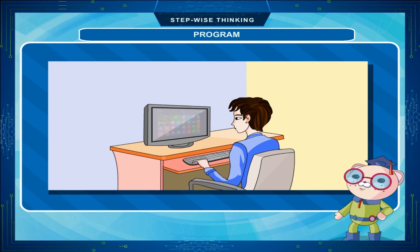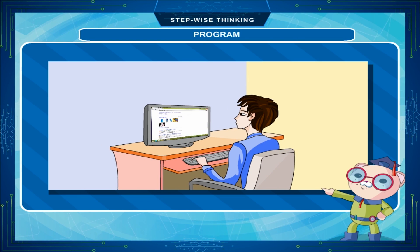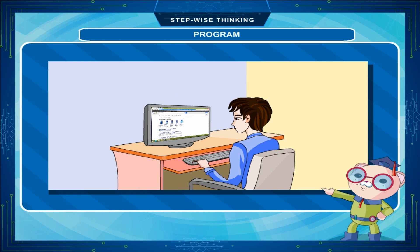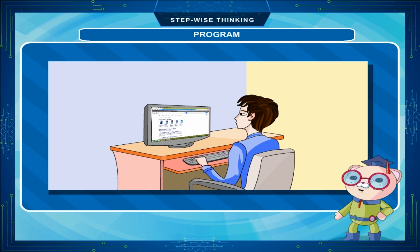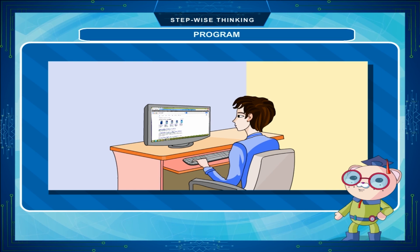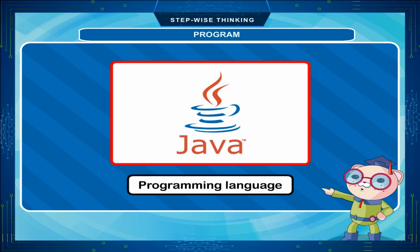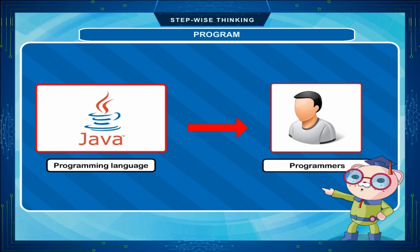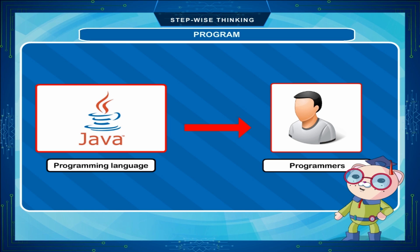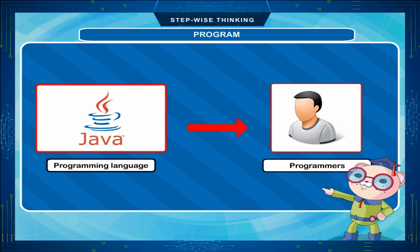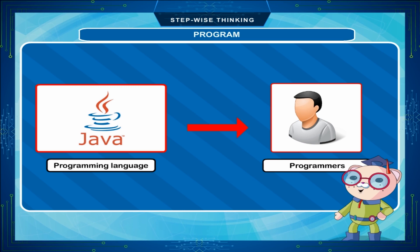A program is a set of instructions given to the computer. Each instruction of the program tells the computer what to do. A program is written in a special computer language called high-level language. Basic and Logo are examples of such languages. If you want to make a program, you have to first learn these languages.